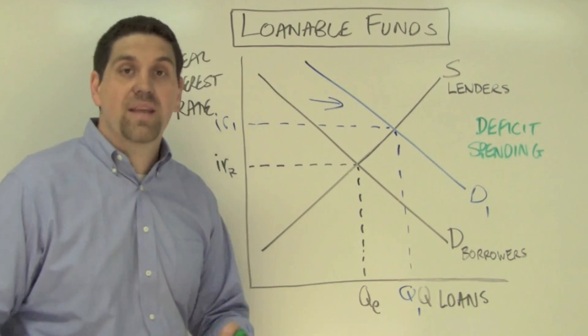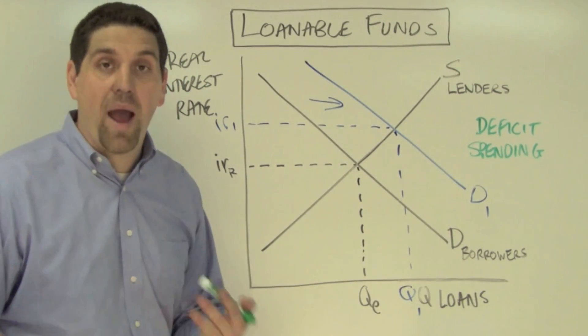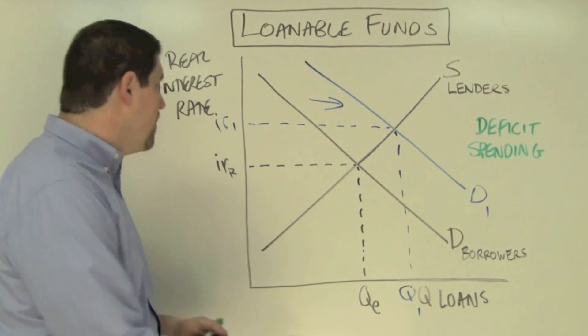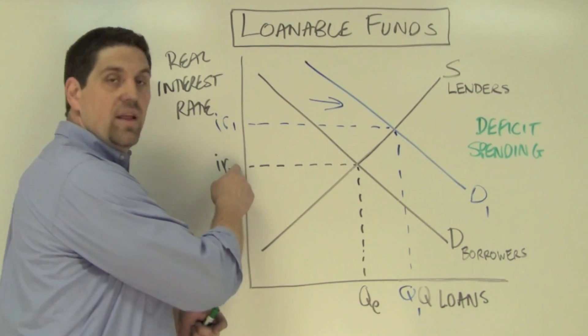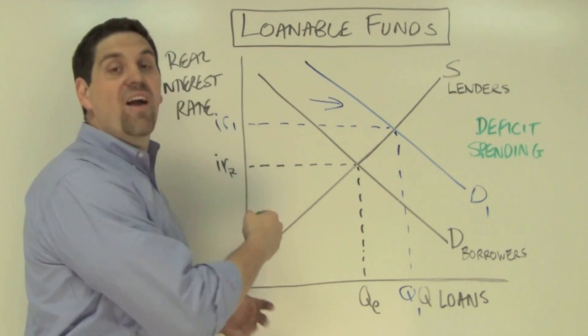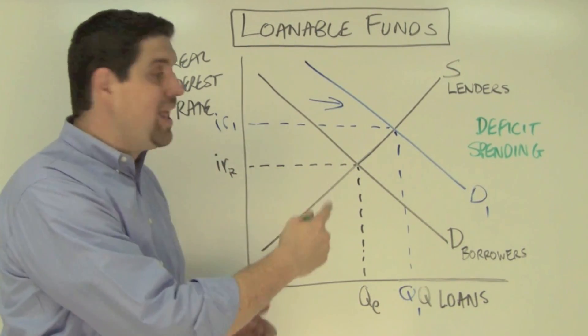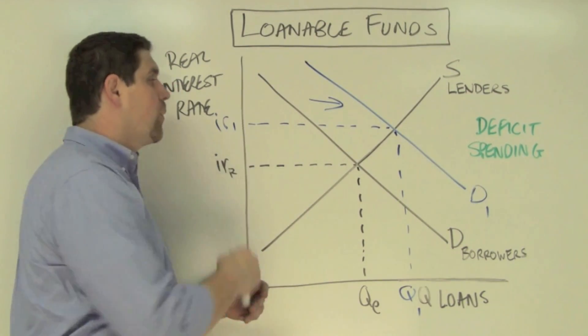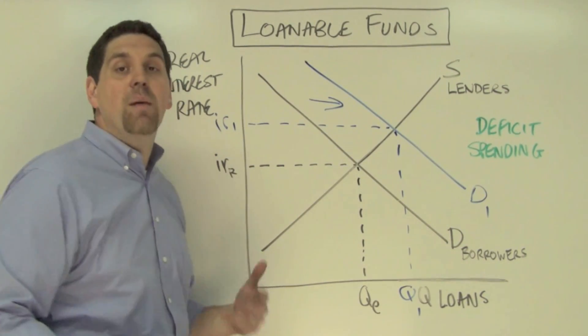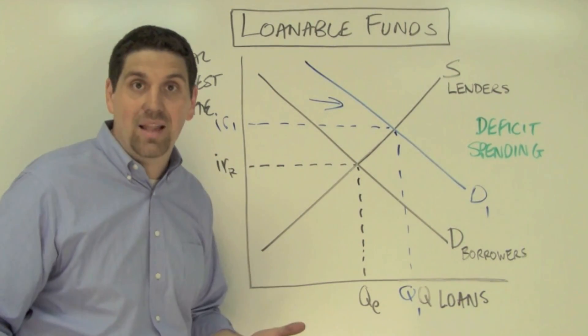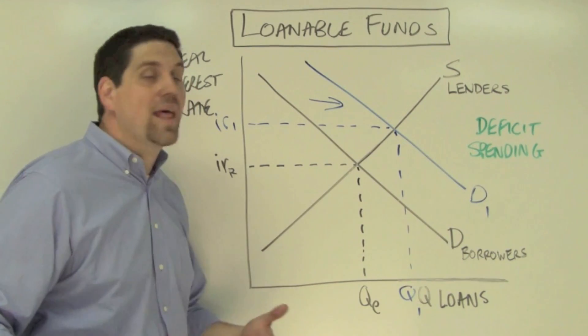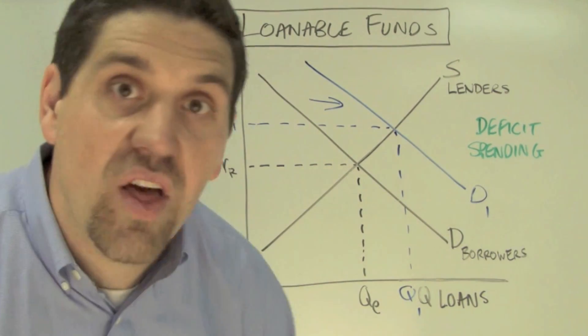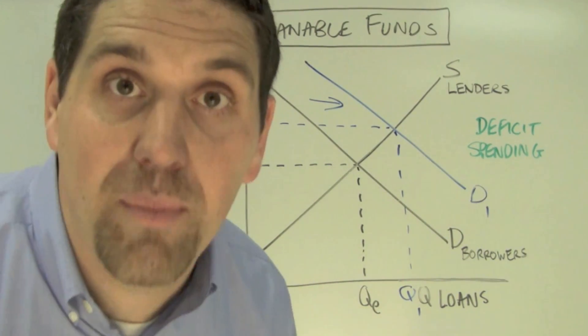Here's an example. I'm a business, and I want to take out a loan to buy a new factory, and I'm going to pay this real interest rate. But when the government's deficit spending increases that real interest rate, I'm less likely to take out that loan, and I'm less likely to invest.